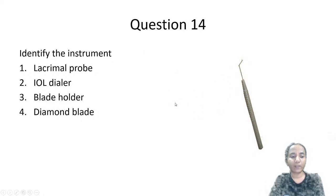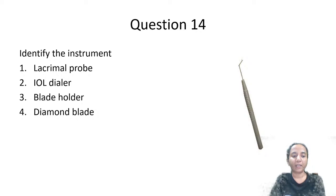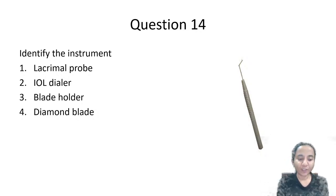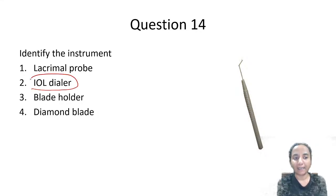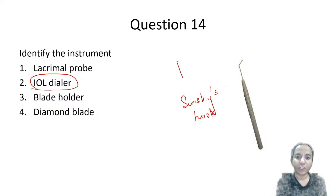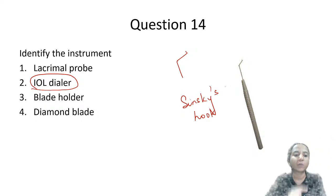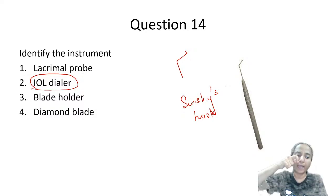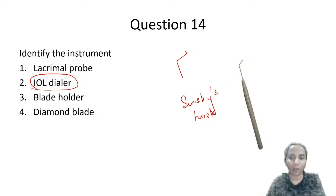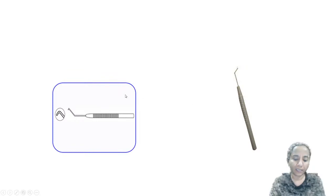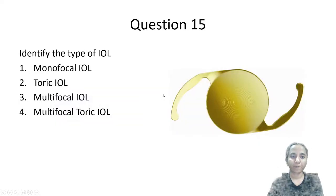Next question: what is this instrument? Options are lacrimal probe, IOL dialer, blade holder, or diamond blade. This is an IOL dialer, also called a Sinsky's hook. The front end is L-shaped with the tip bent downward. After inserting the IOL, this instrument is used to hold and rotate the IOL into the capsular bag.